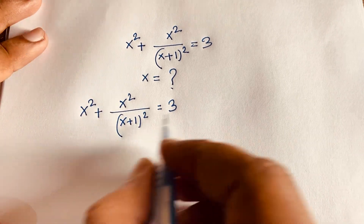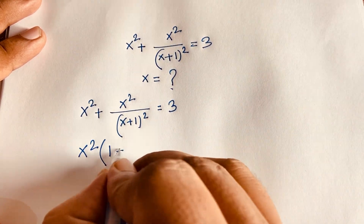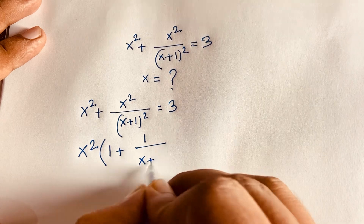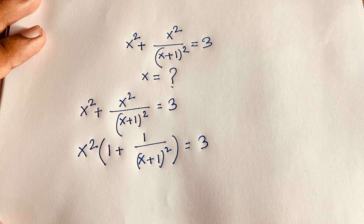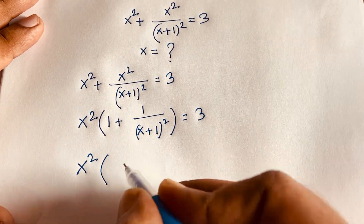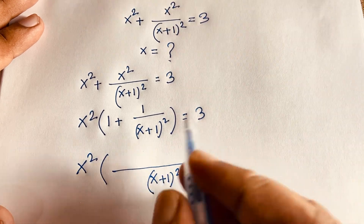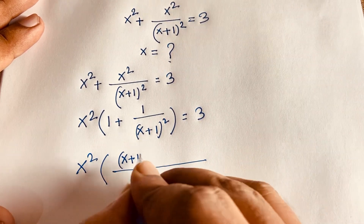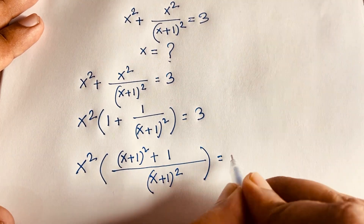Now, x squared is common, so we factor it out. It becomes x squared times (1 plus 1 over (x+1) whole squared) equals 3. The least common value is (x+1) squared, and dividing gives (x+1) squared plus 1 over (x+1) squared equals 3.